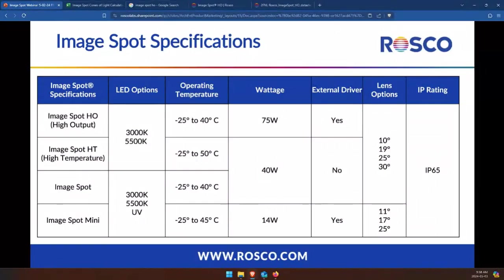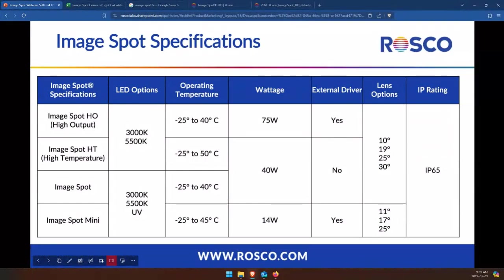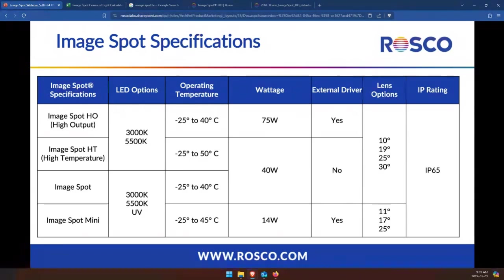For lens options, the ImageSpot Mini is almost half the size of the other fixtures and has its own selection of lenses and accessory sizes. The HO, standard, and HT all share the same four lens options and accessories. Based on customer requests, we recently launched a 10-degree very narrow lens — especially exciting with the ImageSpot HO — allowing you to project extremely sharp images at super long throws, over 70 feet. All ImageSpot fixtures are IP65-rated, both indoor and outdoor safe. You can find this comparison table in our newly published ImageSpot comparison guide on our website.